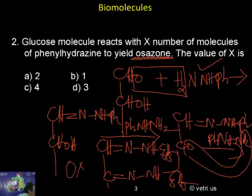This is called osazone. Both glucose and fructose will give the same test. We cannot differentiate glucose and fructose by osazone formation. This is called Amadori rearrangement. The correct answer is D.